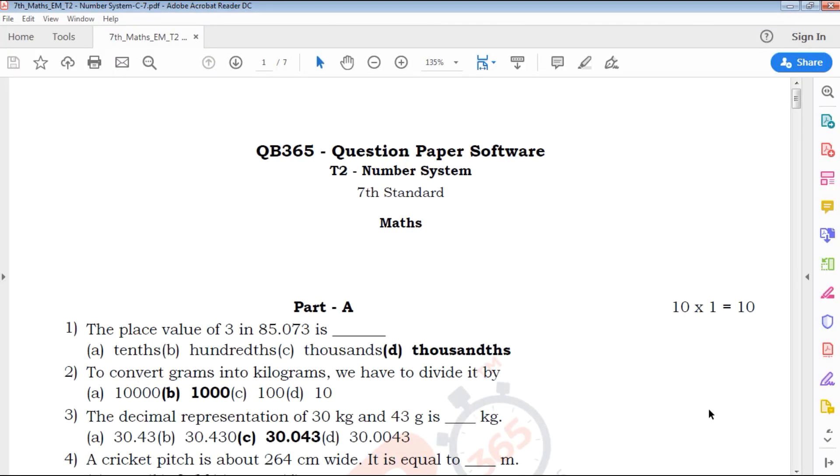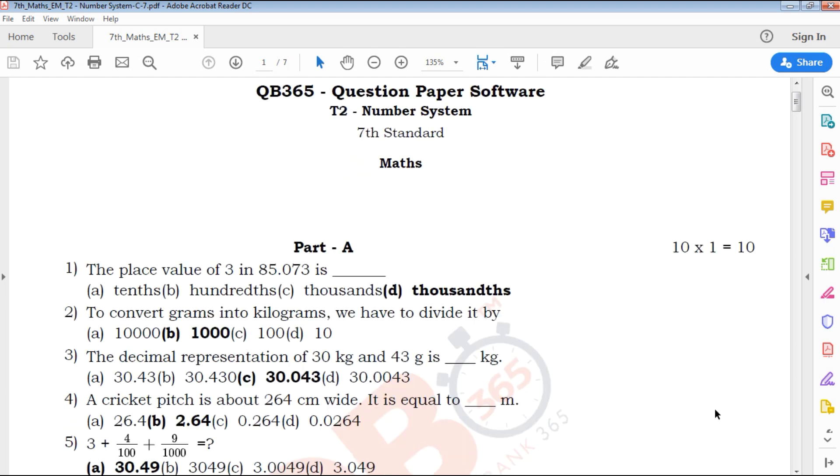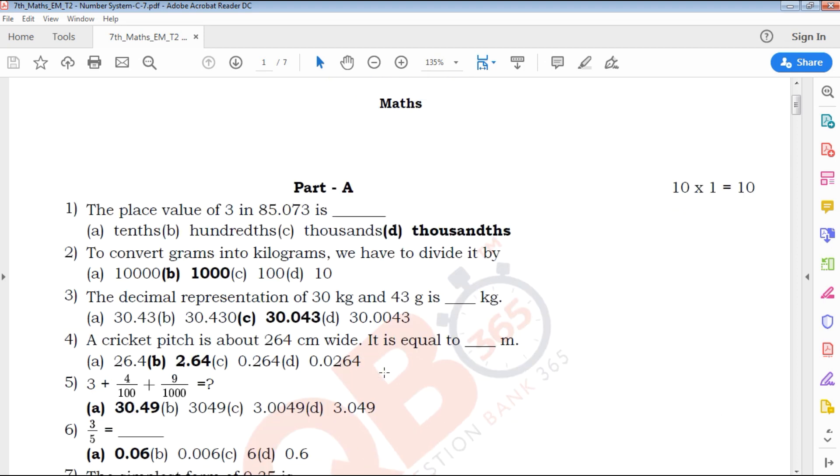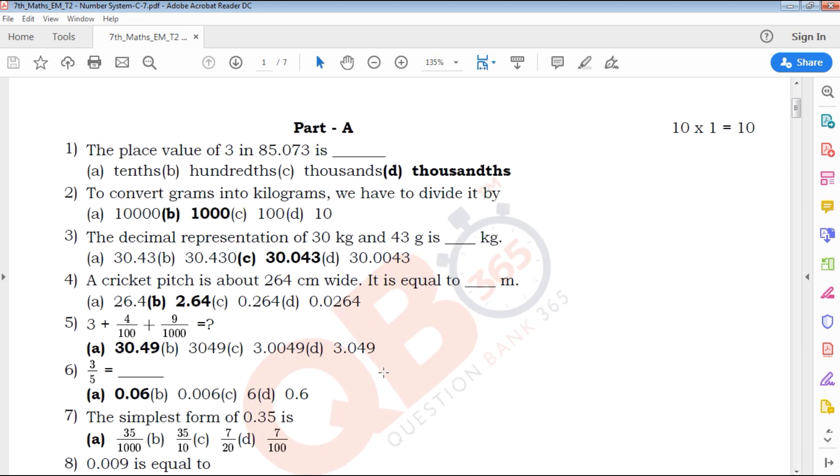Hi everyone, welcome to QB365. Seventh Standard Math Number System. In this particular chapter, it is a review of this video. First, Part A - multiple choice questions. Ten questions. Each question has four options, and the four options contain the exact question and the key answer.